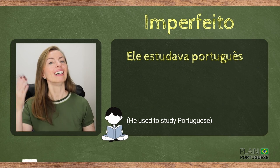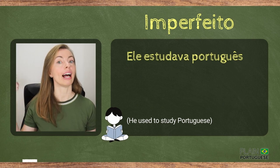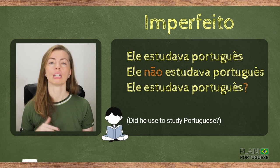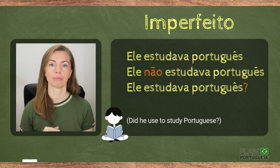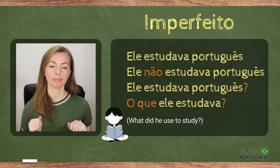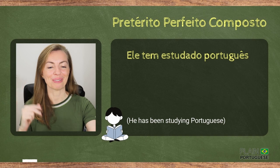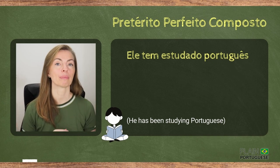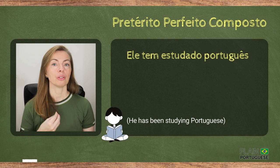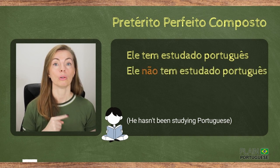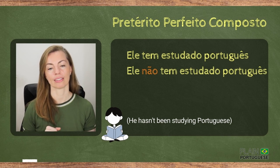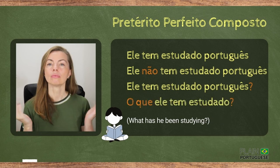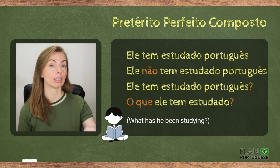Now, in the imperfect — Antigamente — Ele estudava português. Ele não estudava português. Ele estudava português? O que ele estudava? In the pretérito perfeito composto, which you use to talk about what you have been doing lately — Ultimamente — Ele tem estudado português. Ele não tem estudado português. Ele tem estudado português? O que ele tem estudado?